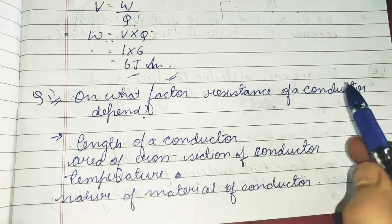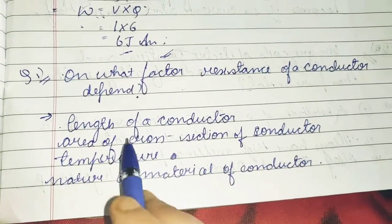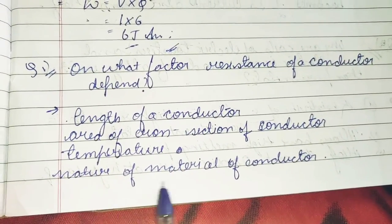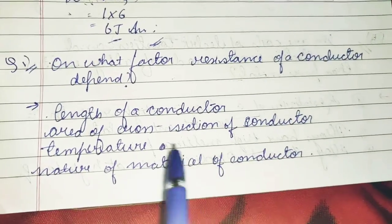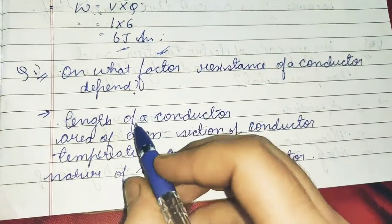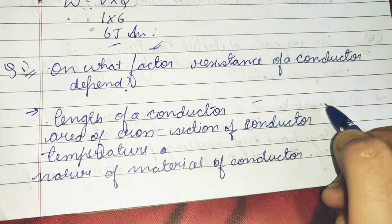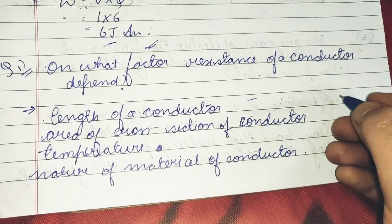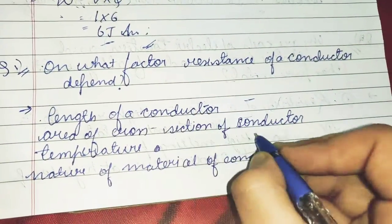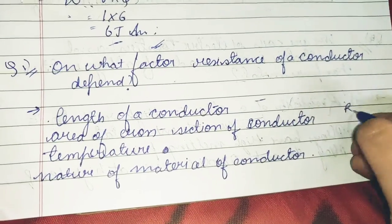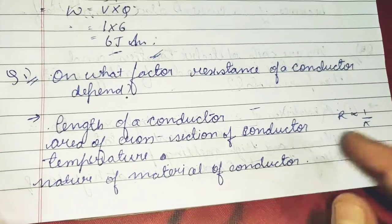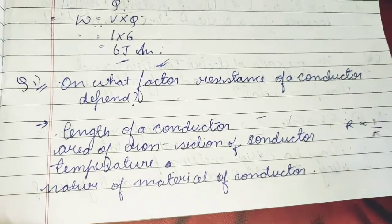On what factors does resistance of a conductor depend? The resistance of a conductor depends on: length of the conductor, area of cross section of the conductor, temperature, and nature of material. Length is directly proportional — when the length is doubled, the resistance also gets doubled. Area of cross section is inversely proportional. You can define temperature and give examples to make your notebook presentable.